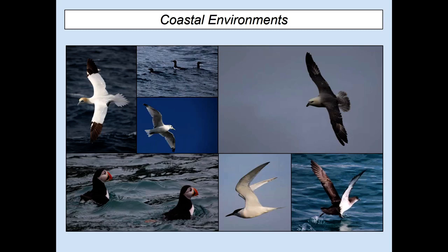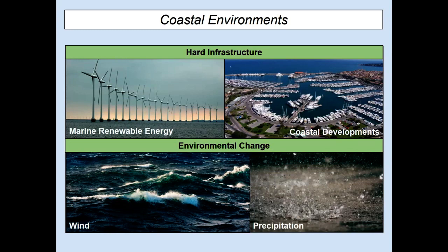These habitats are also very vulnerable to environmental change. This can occur through two means: direct human activities such as hard infrastructure — marine renewable energies and coastal developments which change the physical environment — and also the impact of environmental change. For this talk I'm going to focus on wind and precipitation. You can broadly split these threats into those two categories, which will link into the two processes I'm going to discuss.